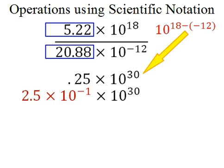Going back to the original problem, we next multiply the powers 10 to the negative first and 10 to the 30th. Since they have the same base, we're multiplying. We simply add the exponents. Negative 1 plus 30 is 29, so the final answer is going to be 2.5 times 10 to the 29th.